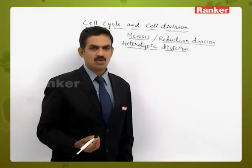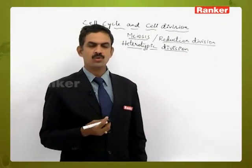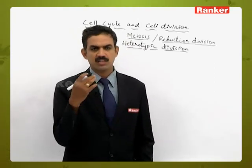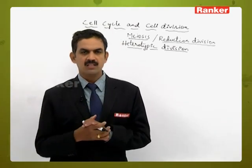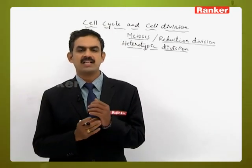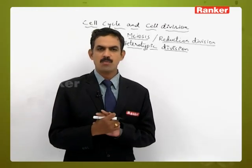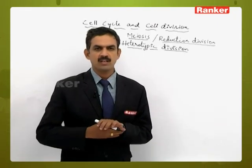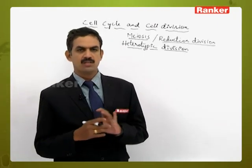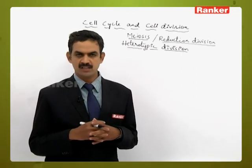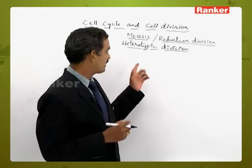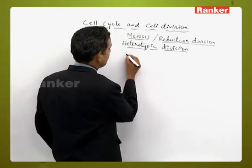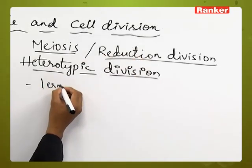Why is it called reduction division? Because the chromosome number is reduced to half. For example, if the cell started as a diploid cell, the daughter cells formed contain a haploid number of chromosomes. Also, the daughter cells formed as a result of meiosis are not similar to each other, which is why we call this type of division a heterotypic type of division.